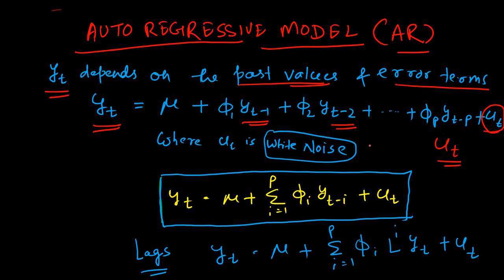Ut is a white noise process. White noise has the property of mean 0 and standard deviation 1, along with a couple of other properties. You can watch the video on white noise to understand what a white noise process is. Ut is a white noise process, and there are several past values of Yt on which Yt depends. That is the basic representation of an autoregressive model.